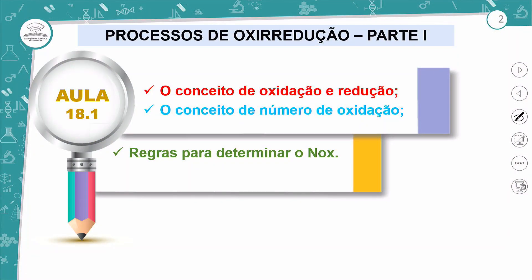Galerinha, nós vamos estar falando sobre processos de oxirredução, ou ainda redox ou outros nomes que vocês podem encontrar. Nos processos de oxirredução, nós vamos ter reações de óxido-redução, ou seja, são reações onde nós vamos ter o processo de oxidação e redução ocorrendo. Esses processos são fundamentais para você entender o que vai ocorrer nas nossas pilhas, pois as pilhas nada mais são do que um fluxo de elétrons — uma extremidade perdendo elétrons e outra recebendo, e isso é justamente o que ocorre na oxidação e na redução.